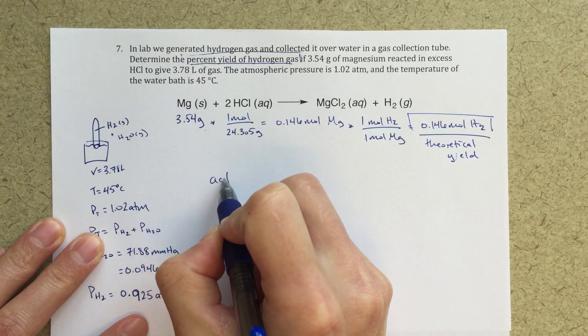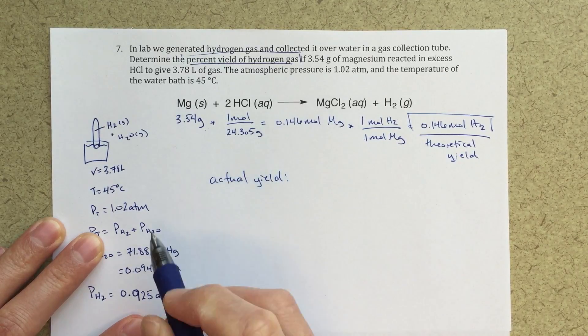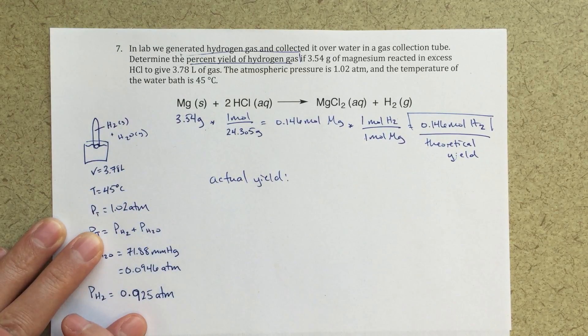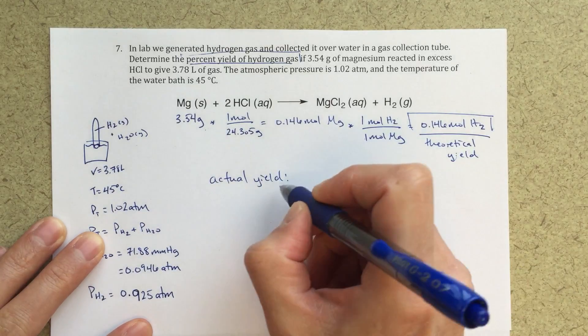So now for the actual yield, well, that's what we actually obtained, right? So we actually obtained 3.78 liters at this temperature and this pressure and so on and so forth. So to find our actual yield that we obtained, I'm going to use PV equals nRT.